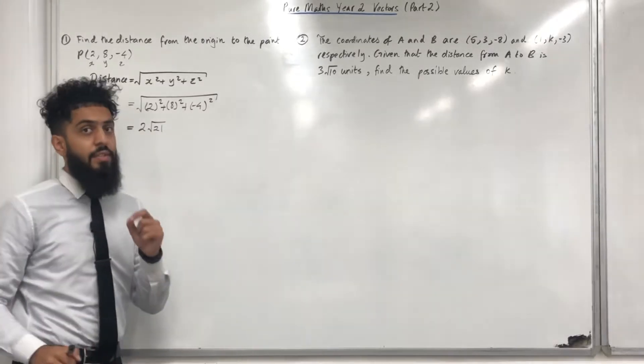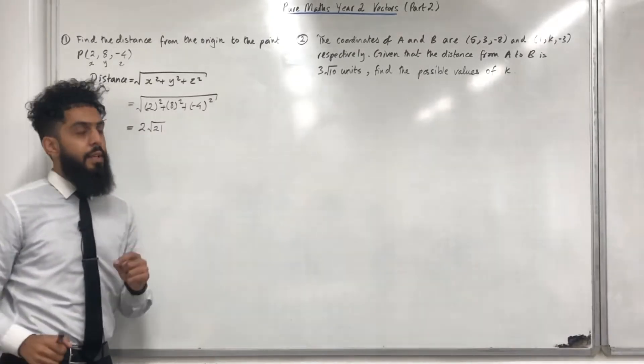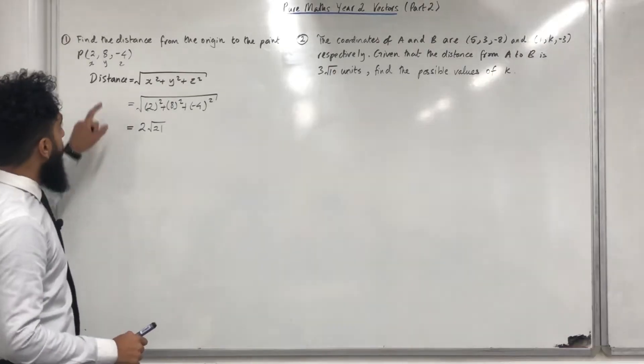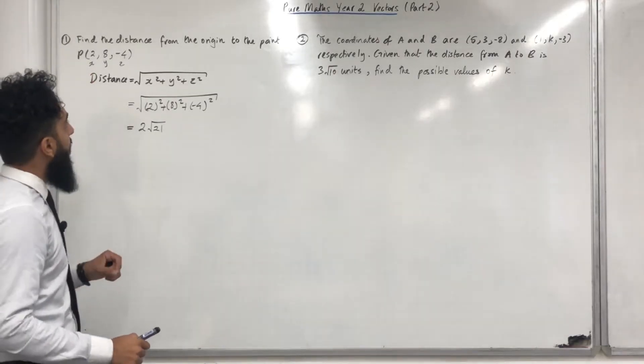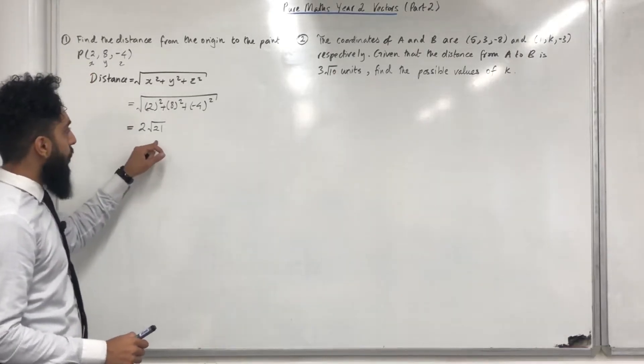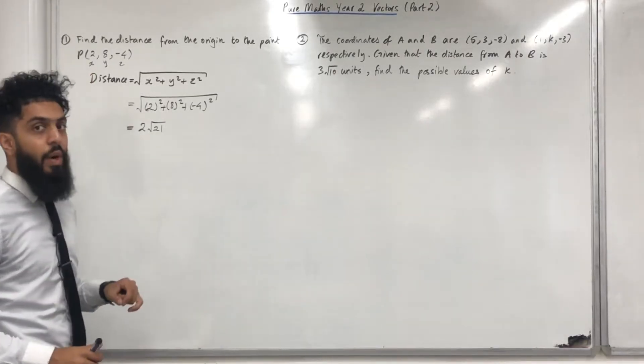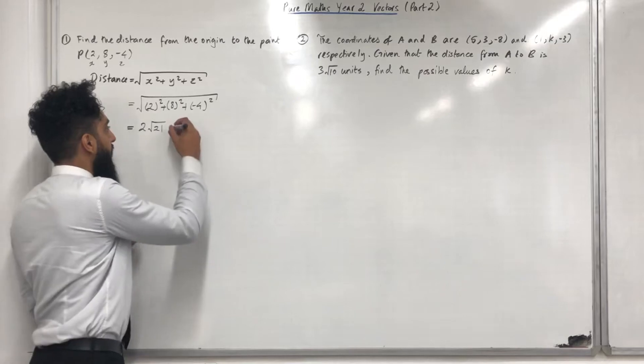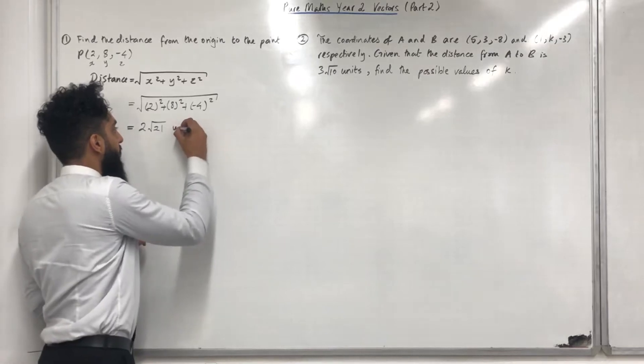So the distance from the origin to the point P with coordinates 2, 8 and minus 4 is 2 square root 21 units.